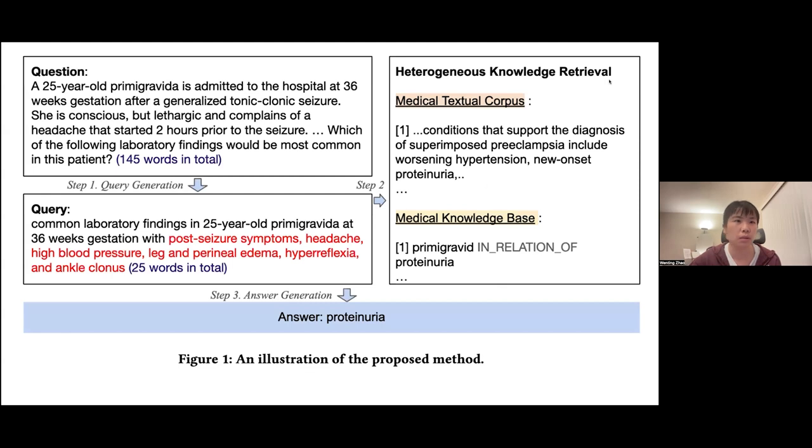Here is the flow for our proposed pipeline. There are a few steps. The original input is the question, and there are around 145 words in total. Given this question, the first step is to generate a retrieval query. So our first step is to rewrite the original lengthy question into a short and concise query. Compared to the original question, we can see there is a big difference regarding the number of words. The query is more concise and it only consists of 25 words. The reason why we want to generate this short query is we want to better integrate this task with the existing off-the-shelf retrievers.